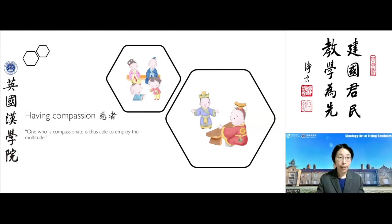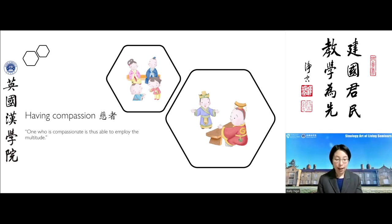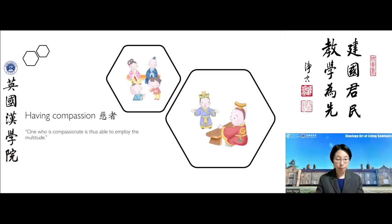The Highest Learning also tells us that one who is compassionate is able to govern the multitude — the people. This is about the parental role: parents manifest a natural compassion for their children and the family as a whole, always mindful of the needs and interests of their children. This natural consideration of those in our care is necessary for anyone managing personnel. The Highest Learning advocates compassion as the guiding principle in governing the people.